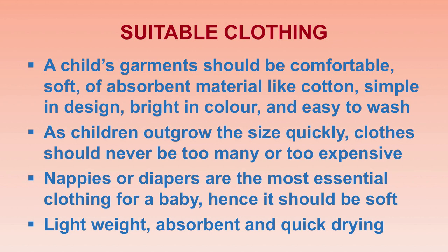Regarding suitable clothing: the softness of the fabric is important because harsh or rough fabric will affect the child's skin and may make the child irritable. All the child's garments should be comfortable, soft in texture, made of absorbent material like cotton, simple in design, bright in color, and easy to wash. Children outgrow sizes quickly, so there is no need to buy expensive clothes. The nappy or diaper is essential clothing for babies — it should be soft, absorbent, light in weight, and quick-drying.